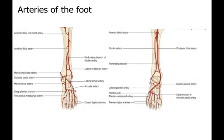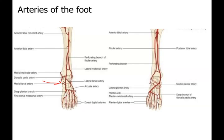The anterior tibial artery: this is an anterior view showing the dorsal side of the foot. When the anterior tibial artery crosses the ankle joint and enters the foot it is called the dorsalis pedis artery, which supplies the dorsum of the foot.